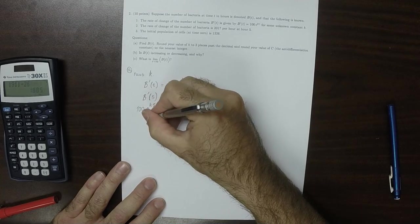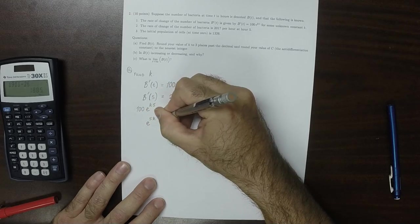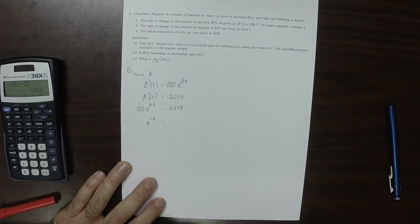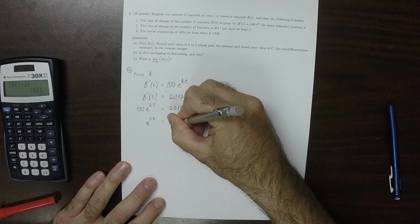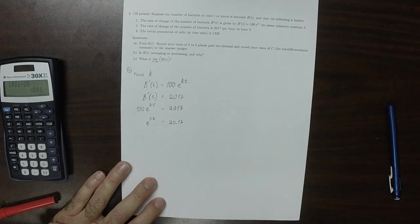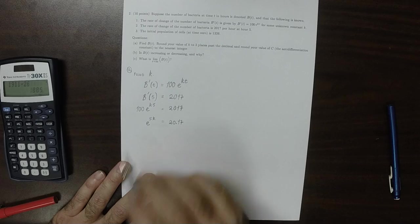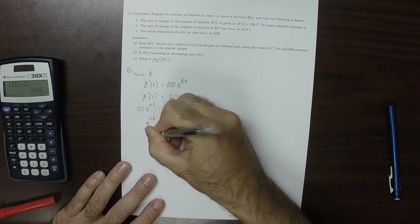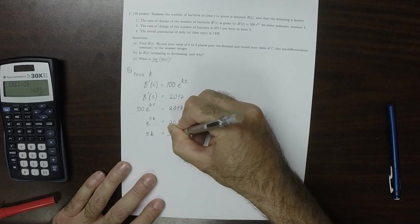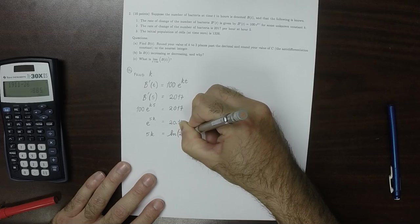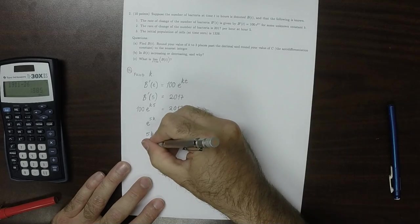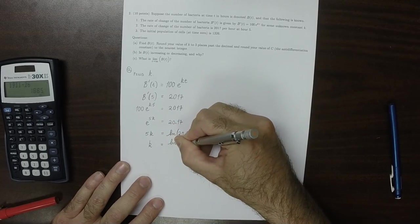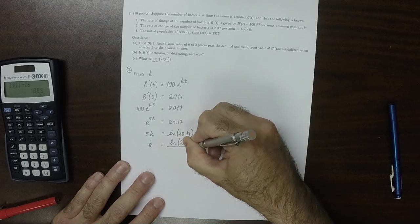So that'd be exponential of 5k is, if I divide both sides by 100, that'd be 20.17. And then to get rid of the exponential, I'll compute logarithm of both sides. So 5k is the logarithm of 20.17. So k is the logarithm of 20.17 over 5.